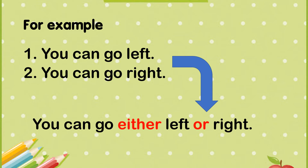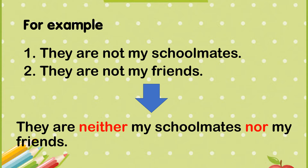For example, we have two sentences: 'You can go left' and 'You can go right' — boleh ke kiri, boleh ke kanan. To combine them into one sentence, we use either/or: 'You can go either left or right' — boleh pergi ke kiri atau ke kanan. This means we are giving choices.